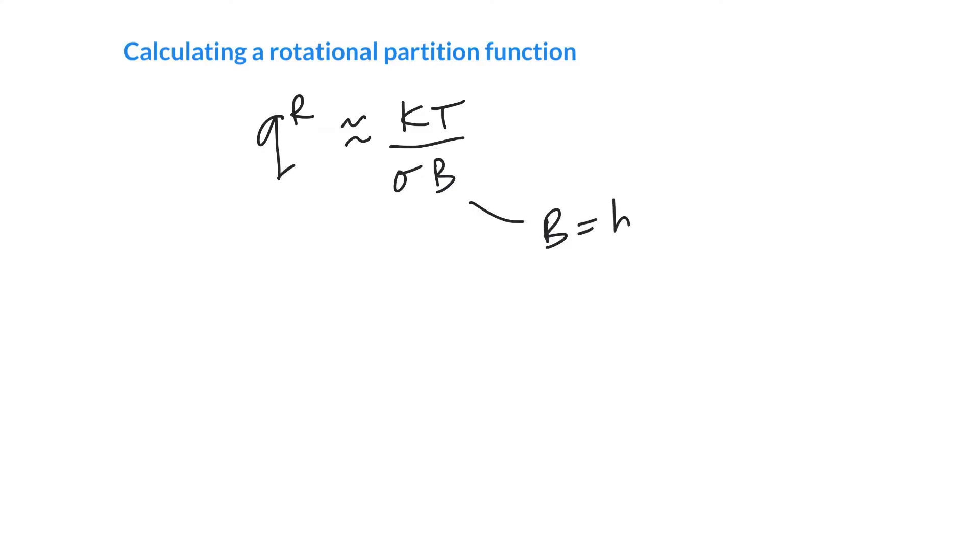b is the rotational constant. Notice I'm not using the same rotational constant as Atkins - I'm using h-bar squared over 2I. Sigma here is a symmetry number.